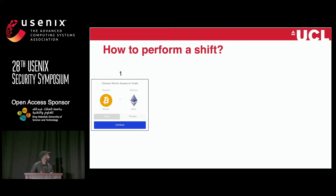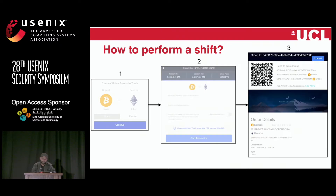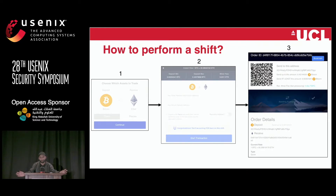How do you do a shift? It's very straightforward. You go to the website and say you've got Bitcoin and you want Ethereum. You then confirm the coins and give them the Ethereum address where you want your coins sent. After that, you send them your Bitcoin to the address they specify. Once they confirm and validate the transaction, they send you Ethereum. The trade is completely done — you've gone cross-chain.